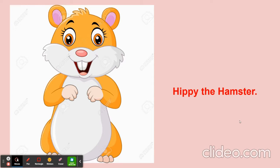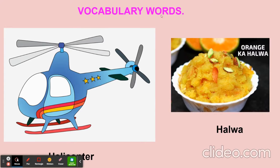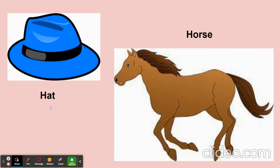Before the story, let's see a few vocabulary words. H for helicopter — this is a means of transport. H for halva — if there is a festival or it is your birthday, mama makes yummy yummy halva, a sweet treat. H for hat — now the next one is H for horse.